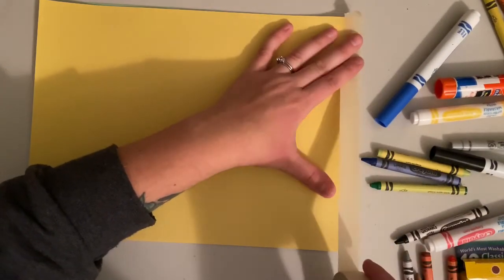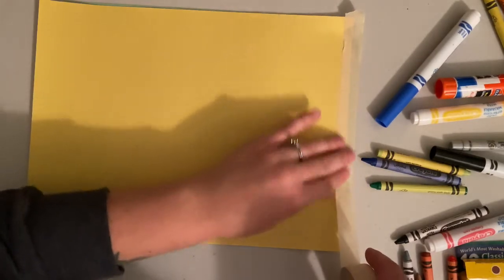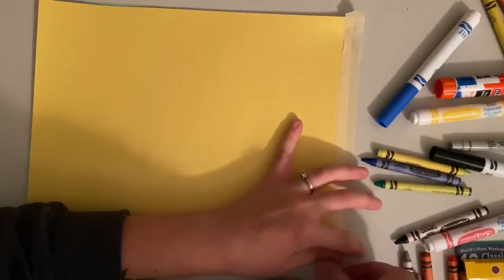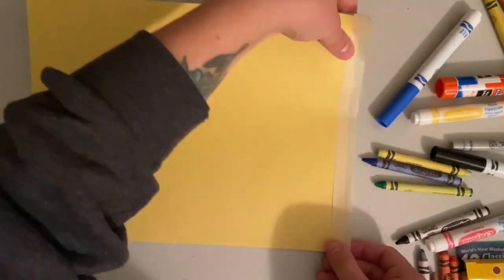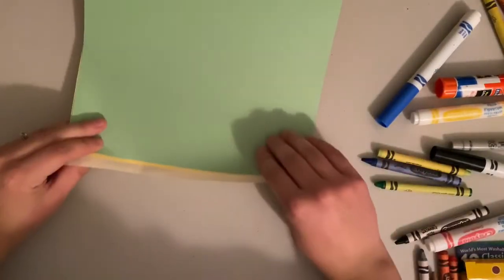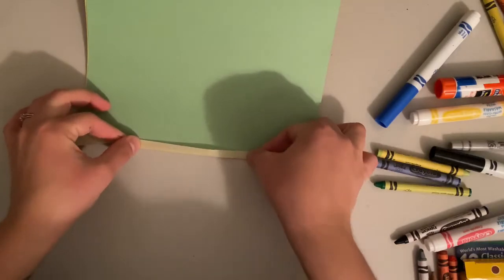So then you can flip it over and fold over the tape so it sandwiches the two pieces of paper together.